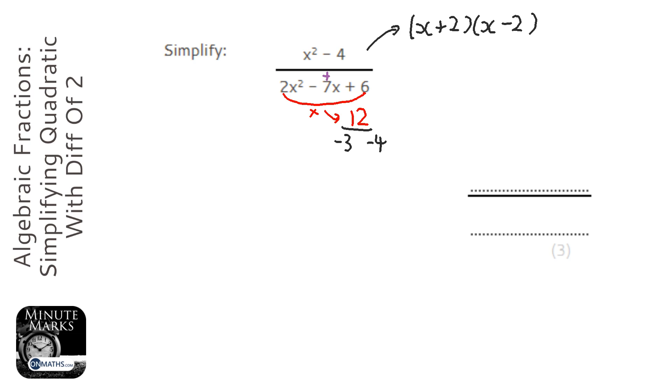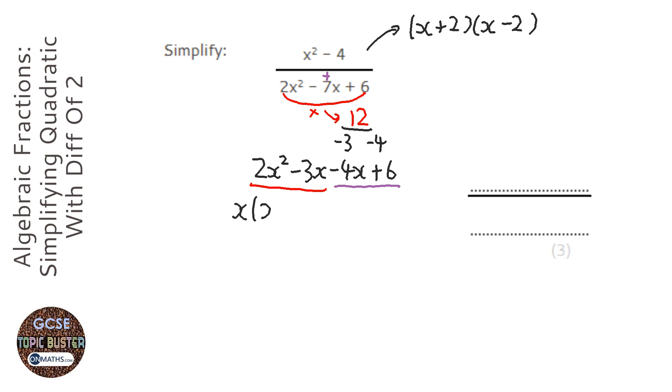So then we rewrite this: 2x squared, but instead of minus 7x we do minus 3x minus 4x plus 6, and we're just factorizing that bit and that bit separately. So we're going to factorize that, well we can bring out an x, there's nothing else we can bring out.